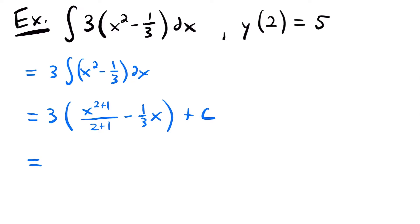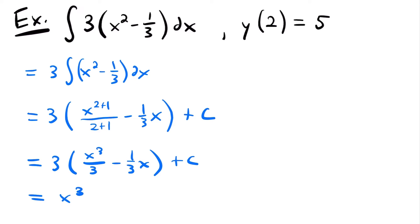Simplifying, we have 3 times x to the third power divided by 3 minus 1/3 x, plus c. Distributing the 3 to each part, the 3s cancel in the first term to give x cubed, and the 3s also cancel in the second term — 3 times 1/3 is 1 — so we get minus x, plus c. This is our general solution. If we were just asked to solve this indefinite integral without the initial condition, we would be done.